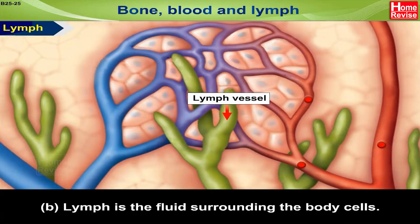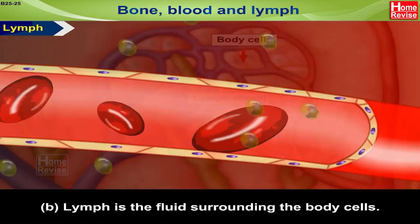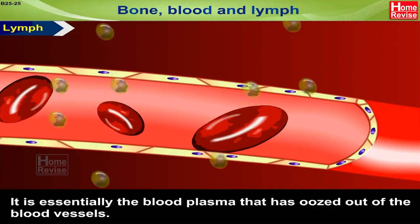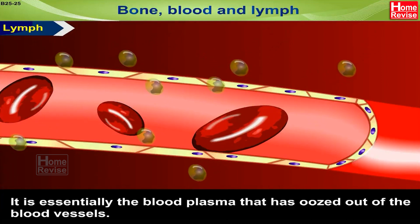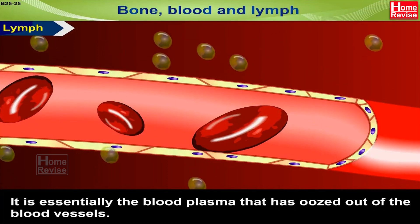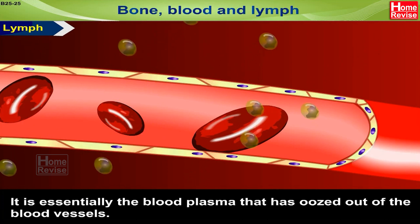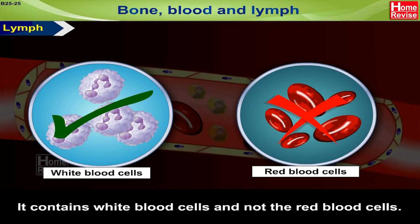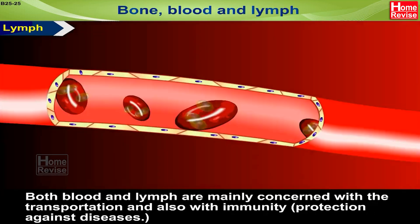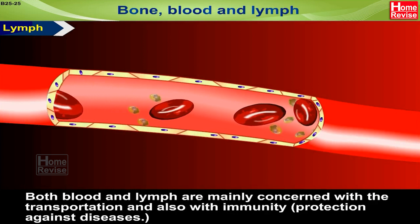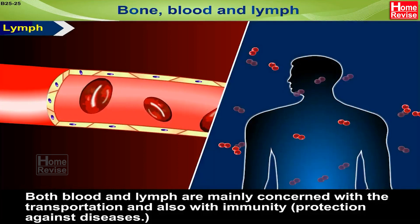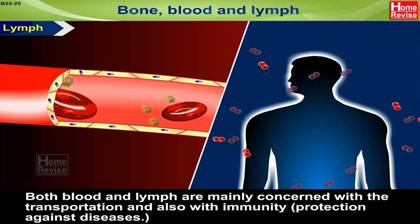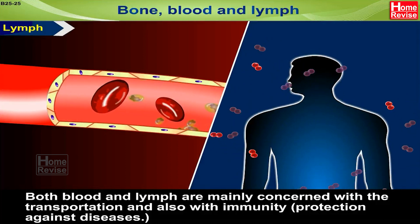Lymph is the fluid surrounding the body cells. It is essentially the blood plasma that has oozed out of the blood vessels. It contains white blood cells but not red blood cells. Both blood and lymph are mainly concerned with transportation and also with immunity — that is, protection against diseases.